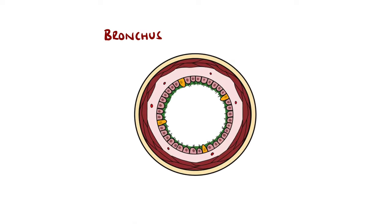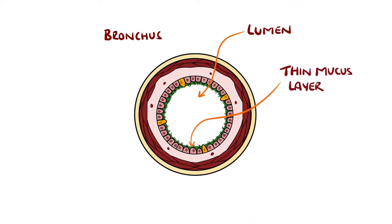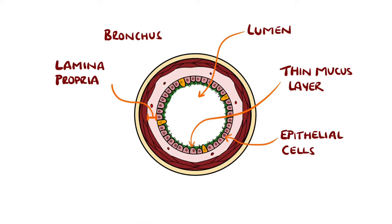Looking at the bronchus more closely, there are multiple layers including the lumen where air is present, a mucus layer to help protect against foreign particles, the epithelial cells, lamina propria, and smooth muscle cells. Now we'll see why these are especially important in the pathophysiology of asthma.